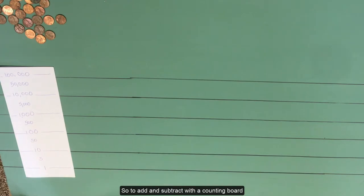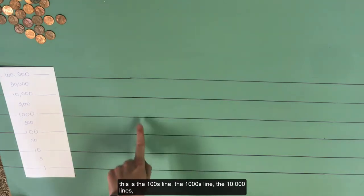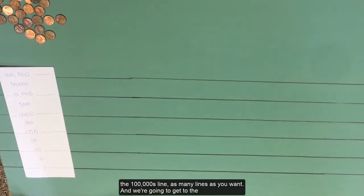So to add and subtract with a counting board, the first thing you need to do is put the number on the board. You would consider each of these lines to be a power of 10. This is a 1, this is a 10, this is the 100 line, the 1000 line, the 10,000 line, 100,000 line, as many lines as you want.